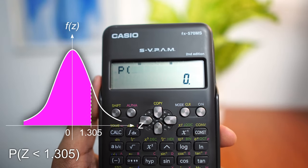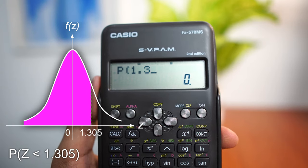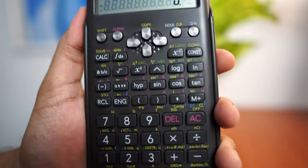This is for lower tail probability. This area would be represented by P. In the bracket, we have to key in the Z-score. Our Z-score here is 1.305. And that's it.